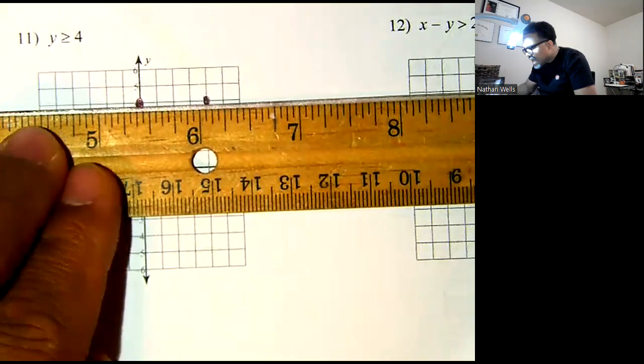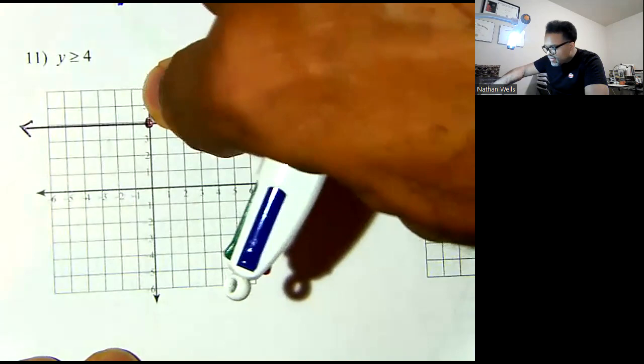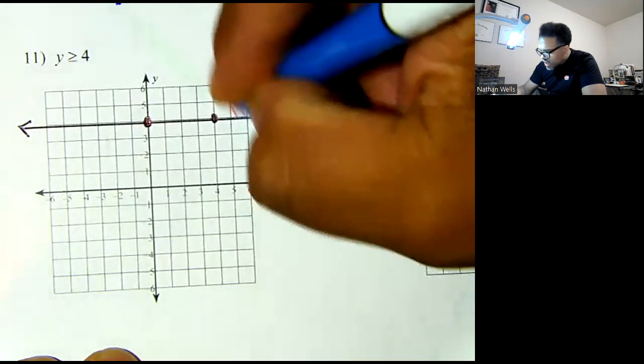Since it's greater than or equal to, that's a solid line. And since it says y is greater, my y values become greater above the line, but they are less than below the line. So I'm going to shade everything above the line.